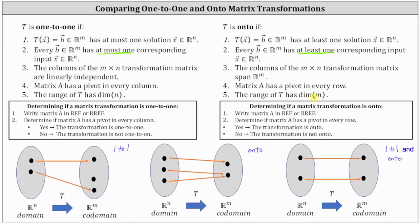When determining whether a matrix transformation is one-to-one or onto, we often use the pivot condition. Writing the transformation matrix in row echelon form or reduced row echelon form: if there is a pivot in every column, the transformation is one-to-one; if not, it isn't. If there is a pivot in every row, the transformation is onto; if not, it isn't.